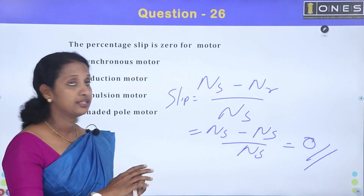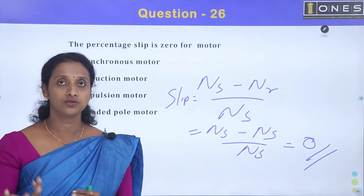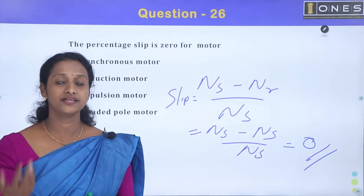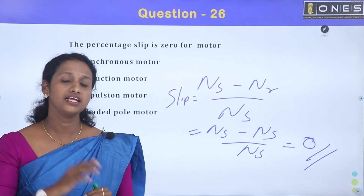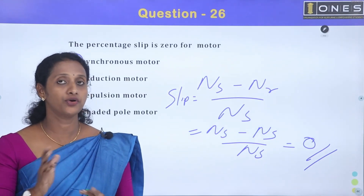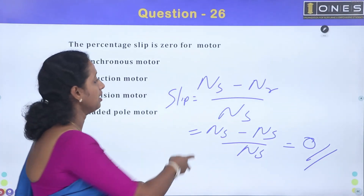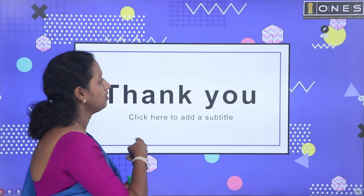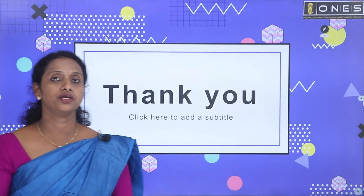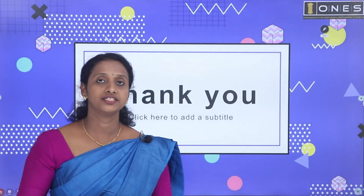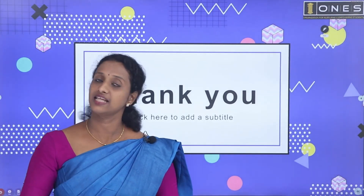The next topic is illumination — luminous efficiency and life span of different types of lamps. This is a very important area. Keep watching, and we will continue in the next session. Thank you.